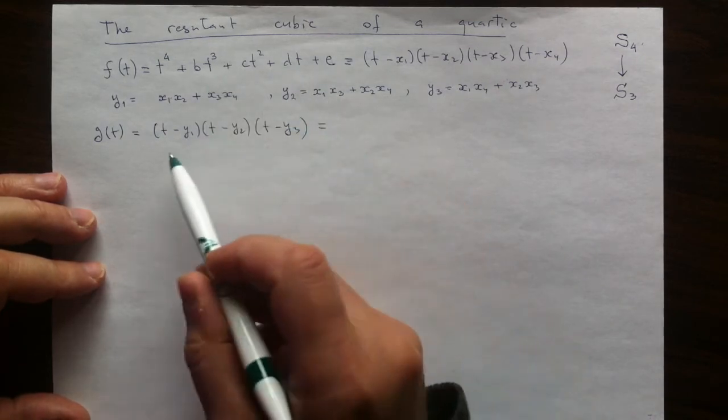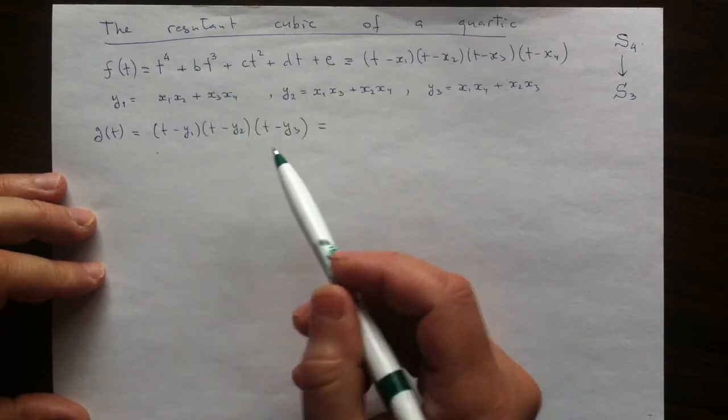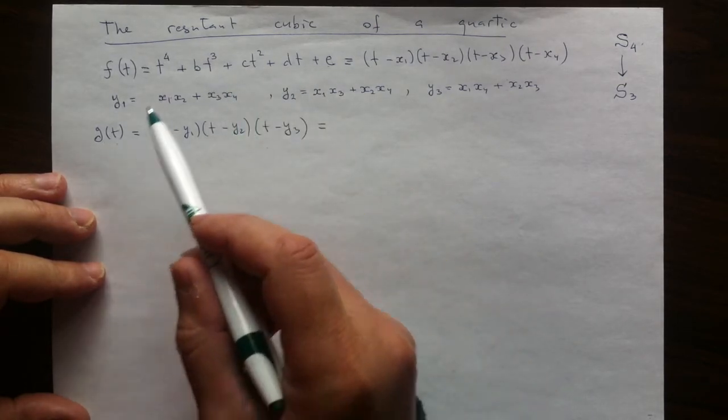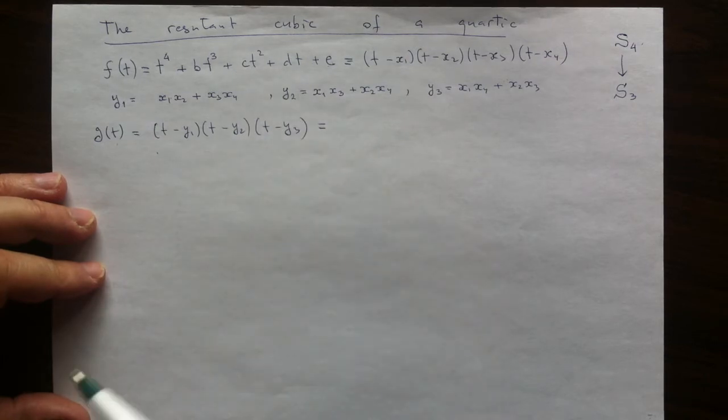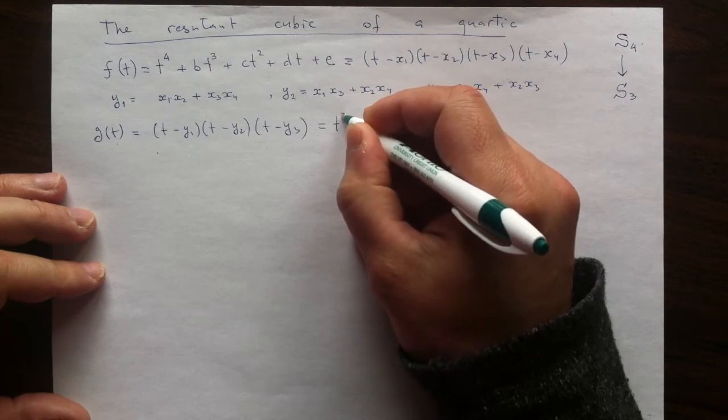The rest is just to figure out what this polynomial is in terms of the original one. What are the coefficients of this polynomial in terms of the original coefficients? That can be done using the theory of symmetric functions, symmetric polynomials.